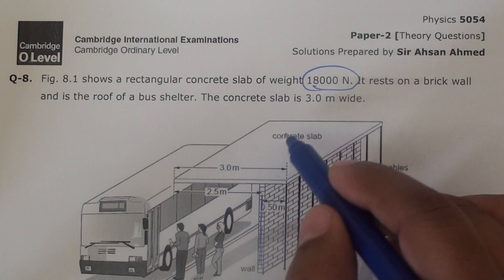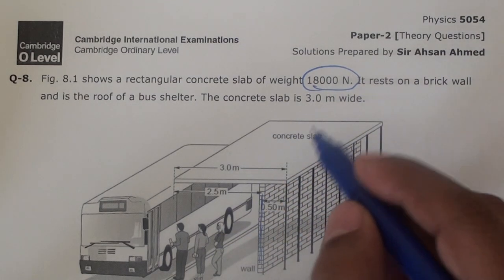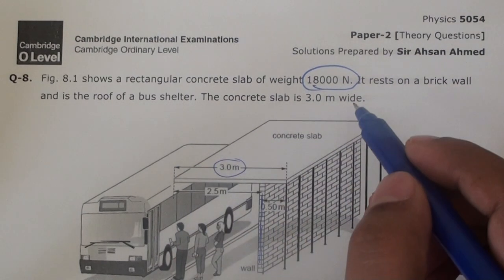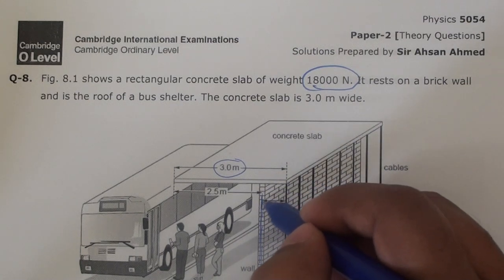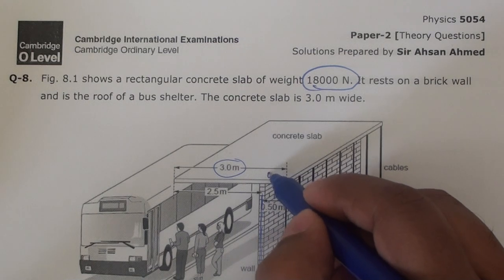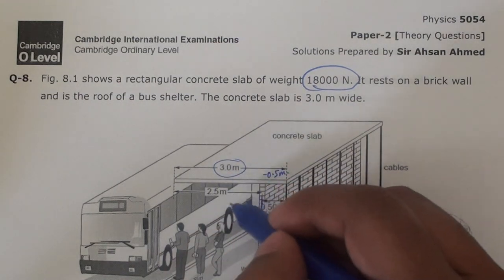And this is a bus shelter. Obviously people are standing. Now if you look at this, this whole has a length of 3 meters, right? And this brick wall is standing behind it to the other end at a distance of 0.5. I want to write here so it gets a bit clear.